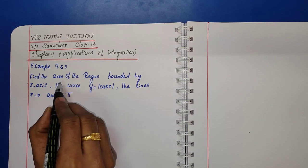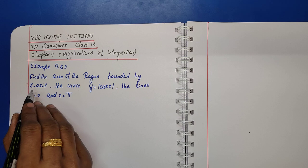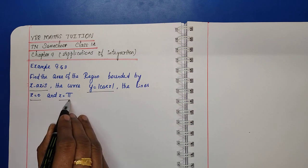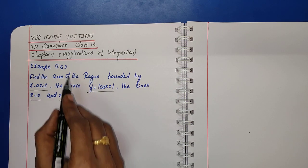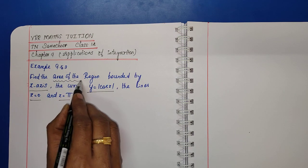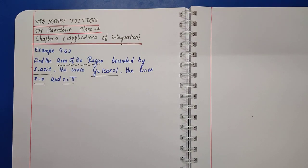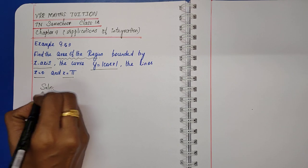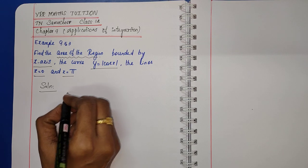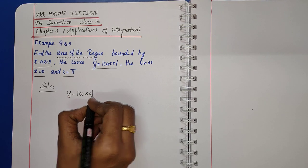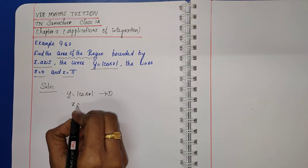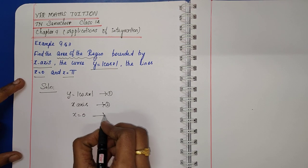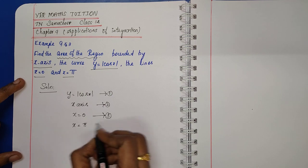The boundaries of the region are: number 1, y is equal to modulus cos x; number 2, the x-axis; number 3, x is equal to 0; and number 4, x is equal to pi.